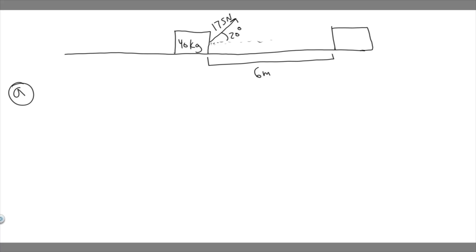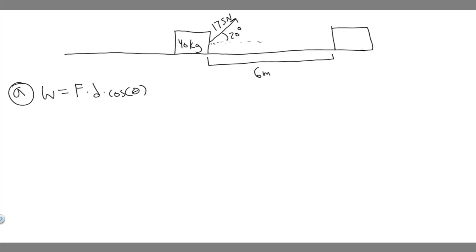For part (a), we're trying to find the work done by the tension force. The formula for work is force times distance times the cosine of theta. The force in this problem is 175 newtons, the distance is 6 meters, and we need to find theta — the angle between the direction the force is applied and the direction of motion.